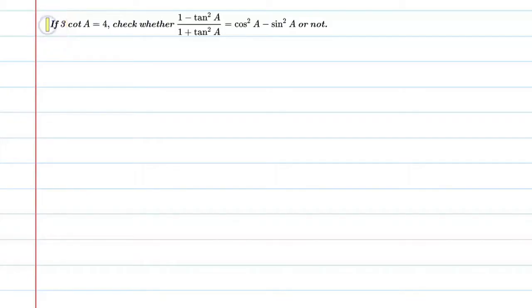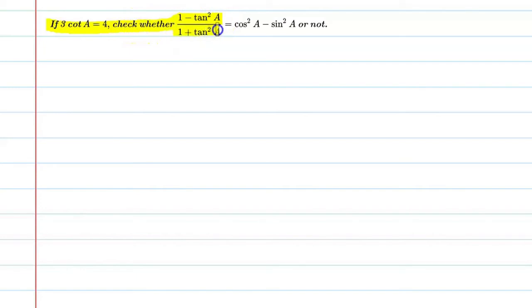Hello students. Let's solve this question. If 3 cot a is equal to 4, check whether 1 minus tan square a upon 1 plus tan square a is equal to cos square a minus sine square a or not.